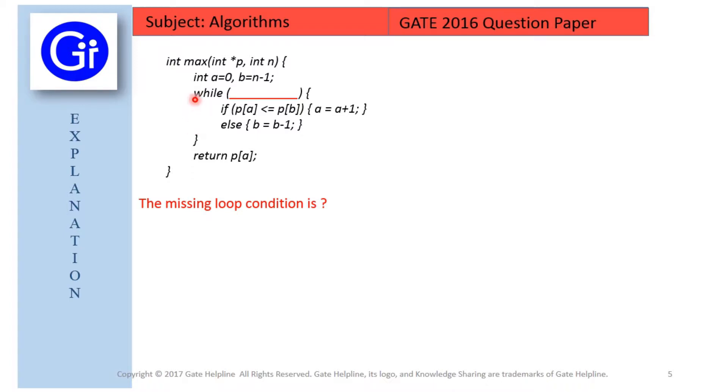And after that we have a while loop. Inside the while loop we are comparing the elements of the array, that is p of a less than or equals to p of b, where a is initially 0 and b is initially n minus 1.